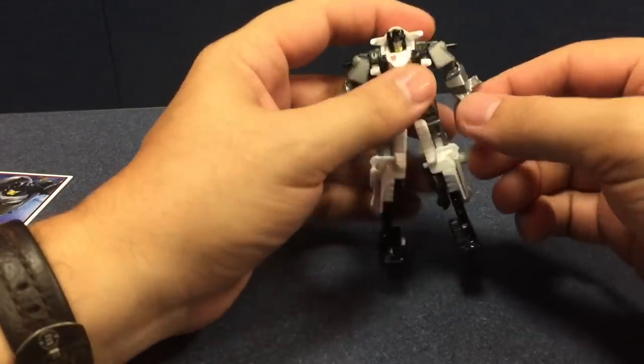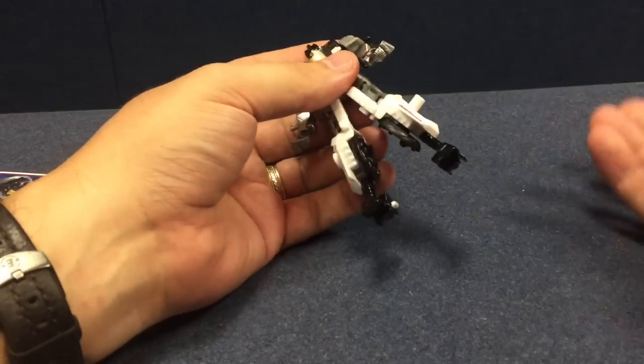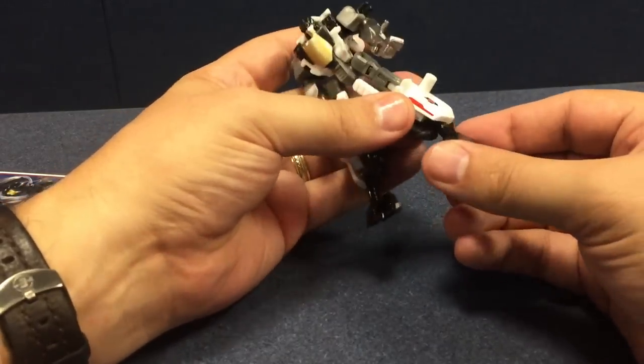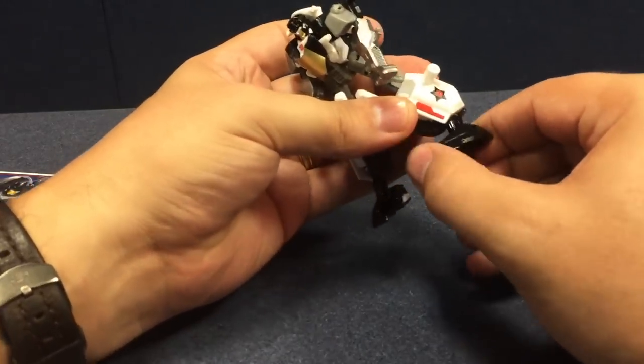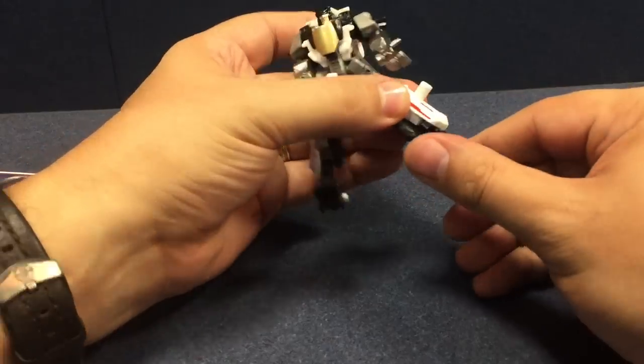Okay, he's got ball jointed shoulders, ball jointed elbows, ball jointed hips and hinged knees. Much like Warpath did, he does have a little extra joint. Again, it doesn't go back. It's got a little tab to prevent it from going back any further.